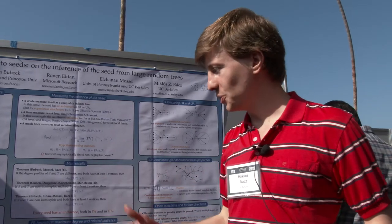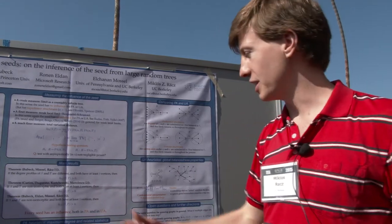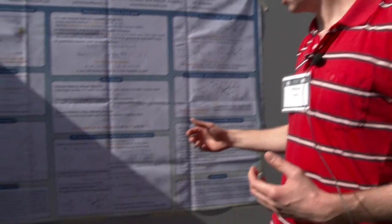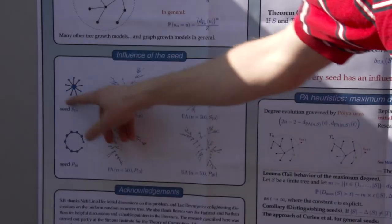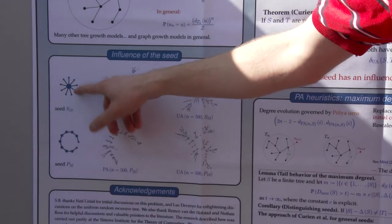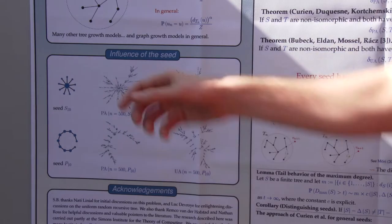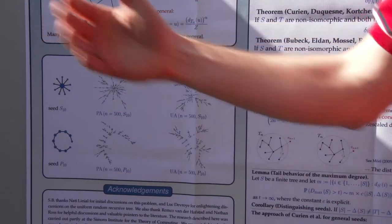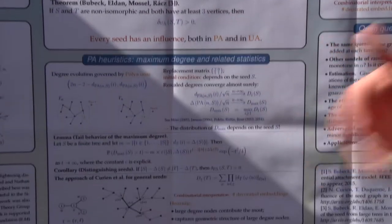So the basic heuristic of why this is true is that for preferential attachment, you can look at the maximum degree and related statistics. You could expect that if you start from a large star, then the central vertex of the star will have a large degree to begin with and this will persist even at large times. So you can see the effect of the seed in the maximum degree and related statistics. So this is exactly what we do.